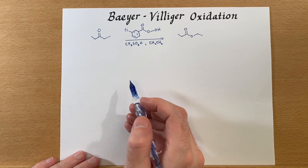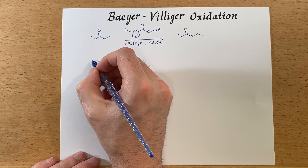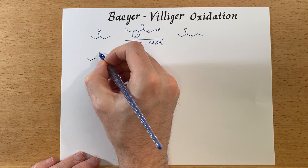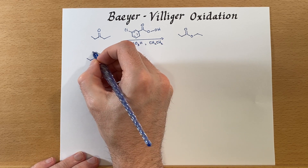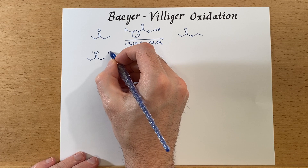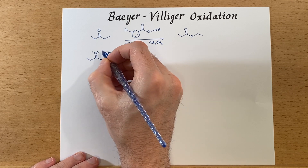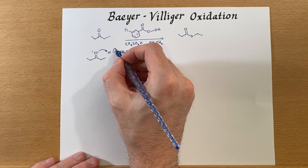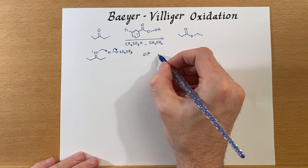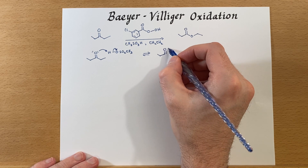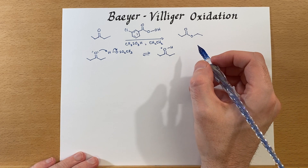Now let's look at the mechanism before we discuss this too much further. We're going to start off just like we've had before — we're going to use this acid to protonate our ketone. So we've protonated our ketone like so.